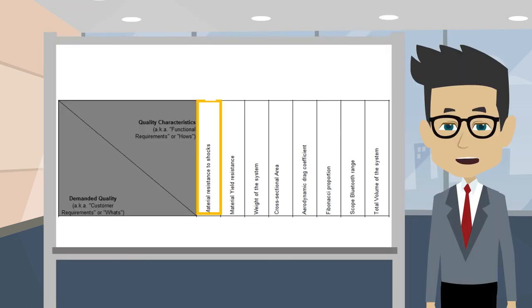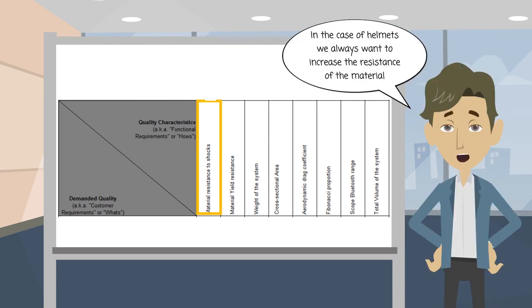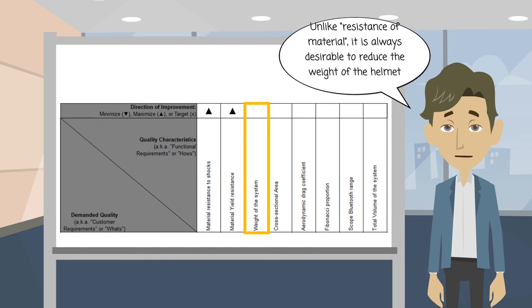Another important step to be conducted is to determine the desired change direction of every single variable. Let's consider the case of the resistance of material variable. What is the desired change for this variable? In the case of helmets, we always want to increase the resistance of the material. Unlike resistance of material, it is always desirable to reduce the weight of the helmet.